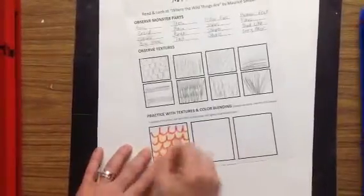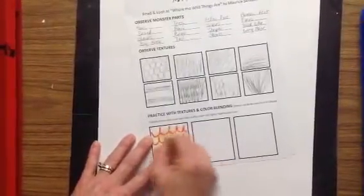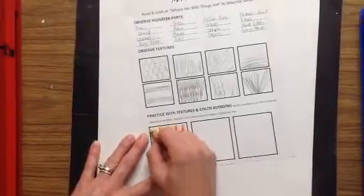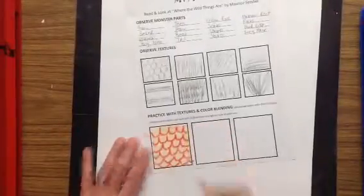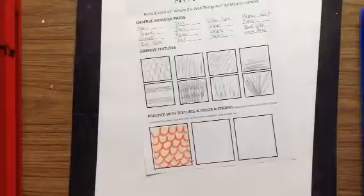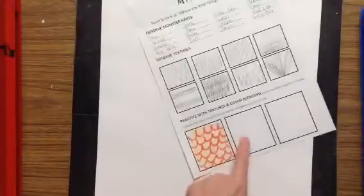As I'm doing this, some of that red is kind of smearing and blending but it does give it a pretty cool look and adds even more value into that texture. So I would like you to try to do that in all three of these boxes right now using crayon.